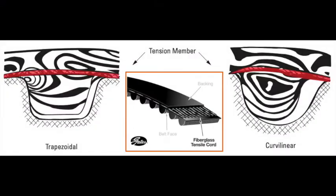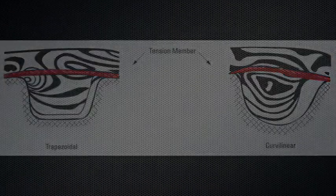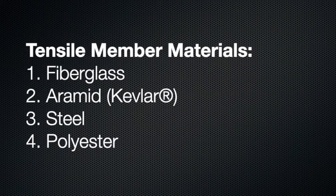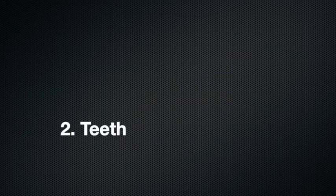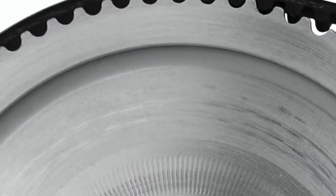1. Tensile member: The tensile member contributes to a belt's elasticity and stiffness under tension and is one marker of precision synchronization. The tensile member can be made of fiberglass, aramid, Kevlar, steel, or polyester.